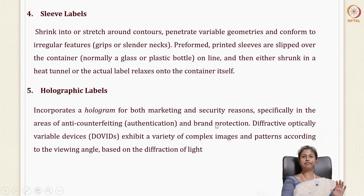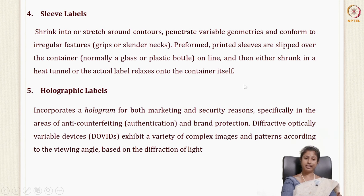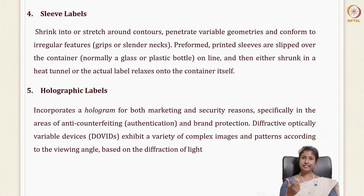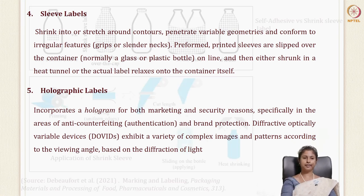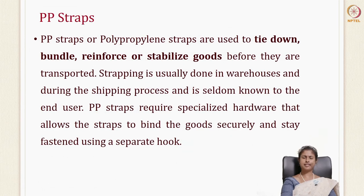The last type of label is the holographic label, which includes a hologram. This is very important for branding and authentication. Diffractive optical variable devices give complex images when you tilt the label, helping to verify the authenticity of the product, since there are many duplicate products on the market and holographic labels help identify the authentic ones.